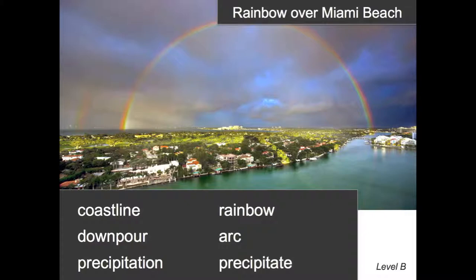Each fine art image is always followed by a real-world photo. Here, students follow the artwork of the Indian woman seeking refuge from a storm with an image of a rainbow over Miami Beach following a downpour.